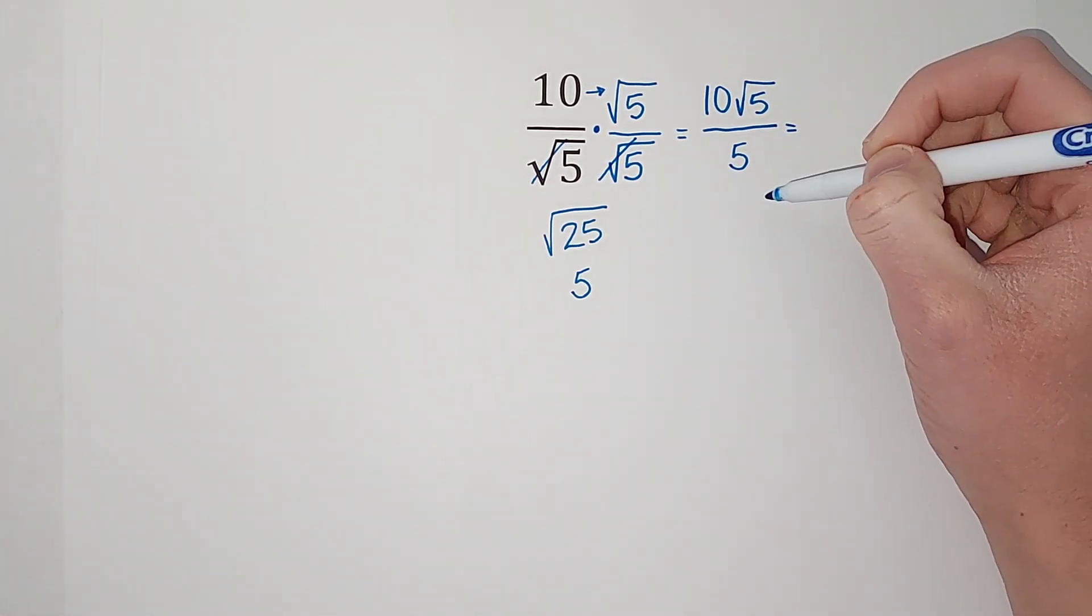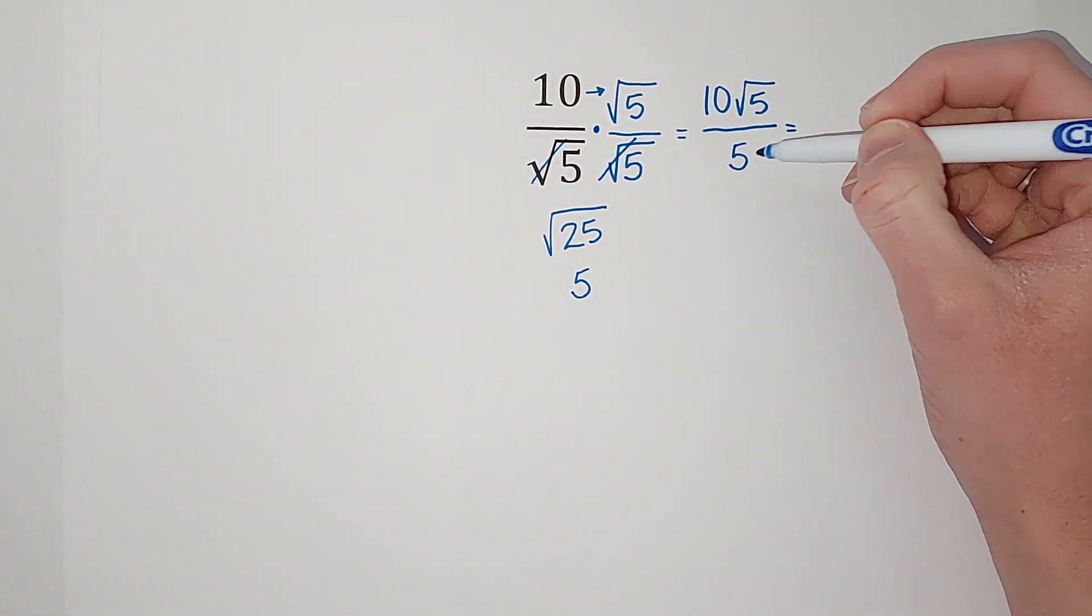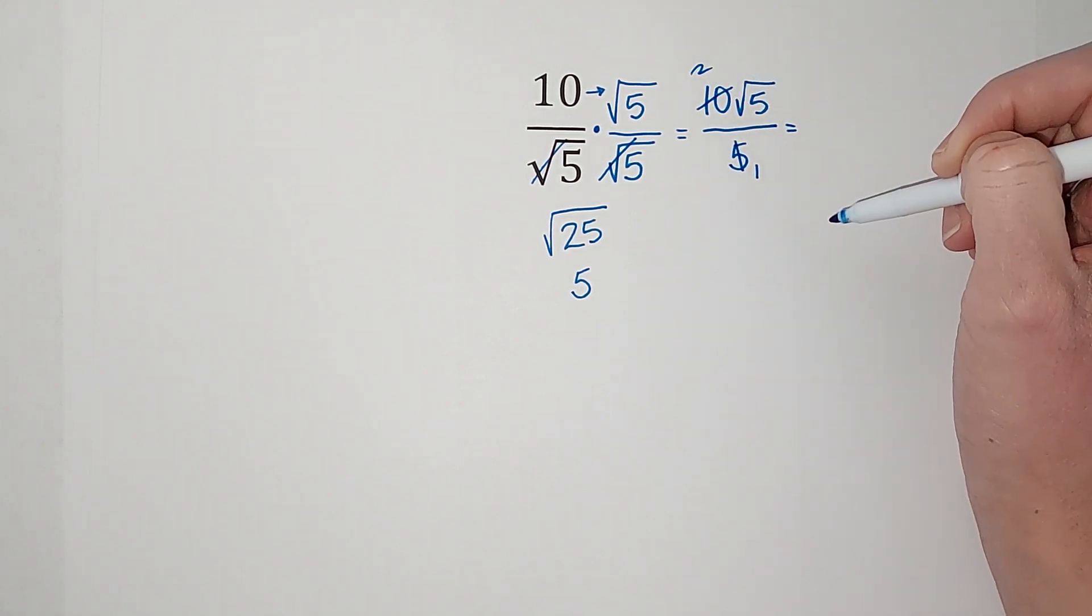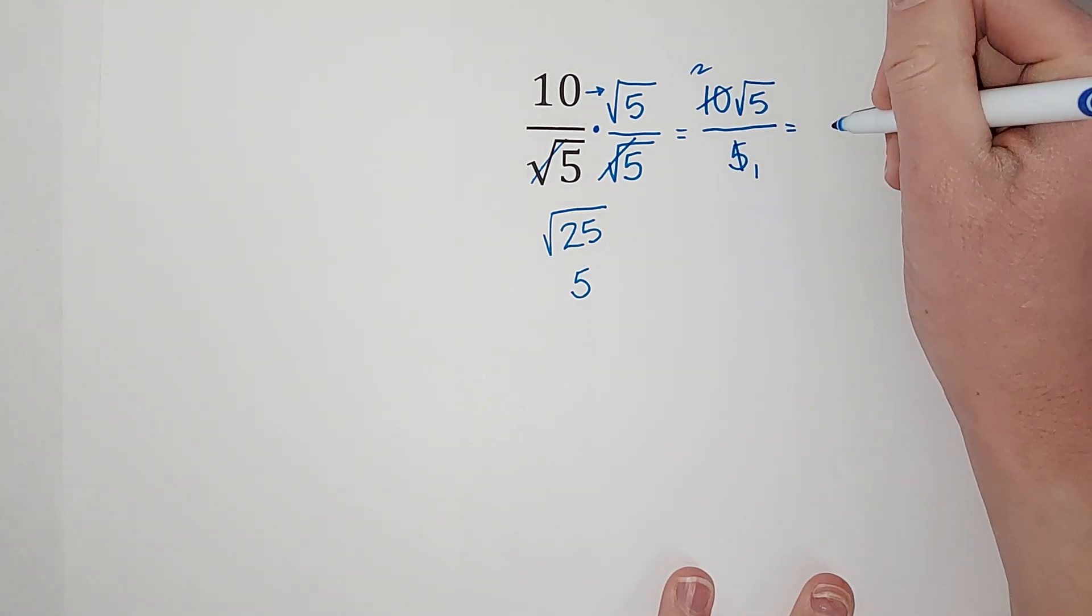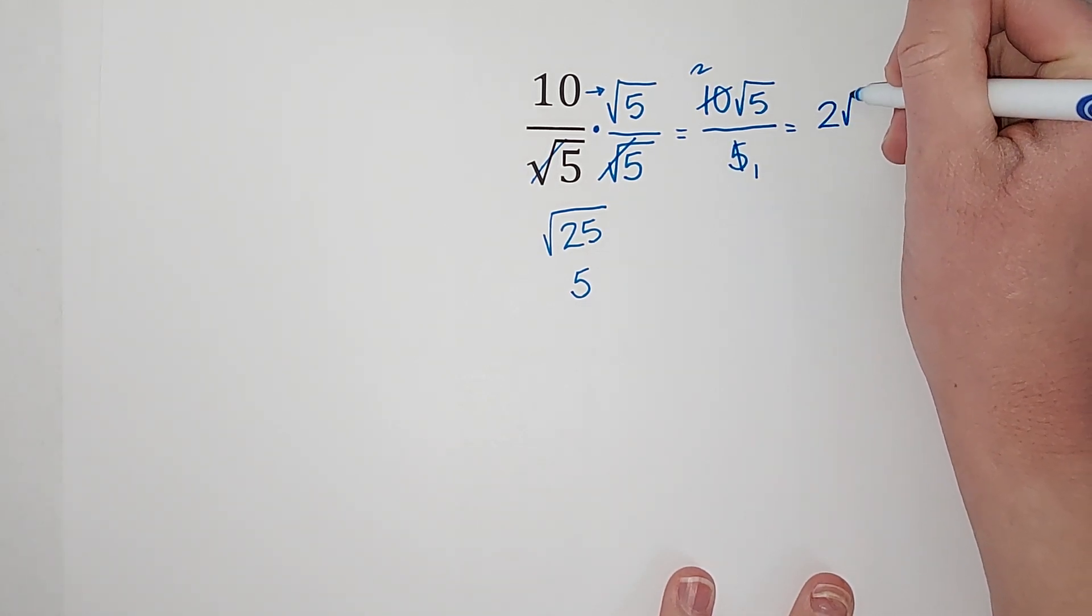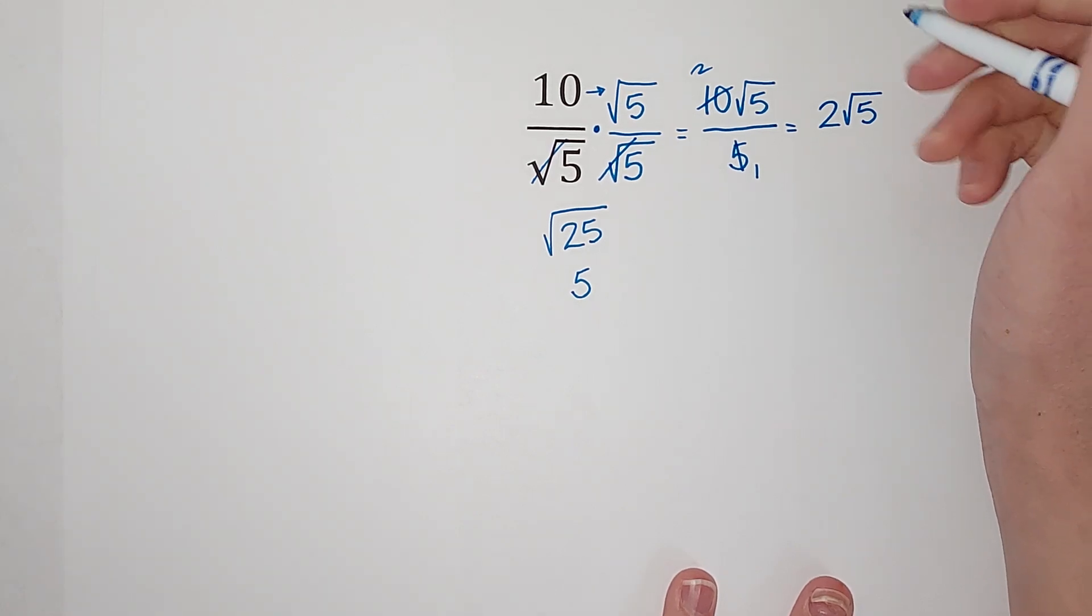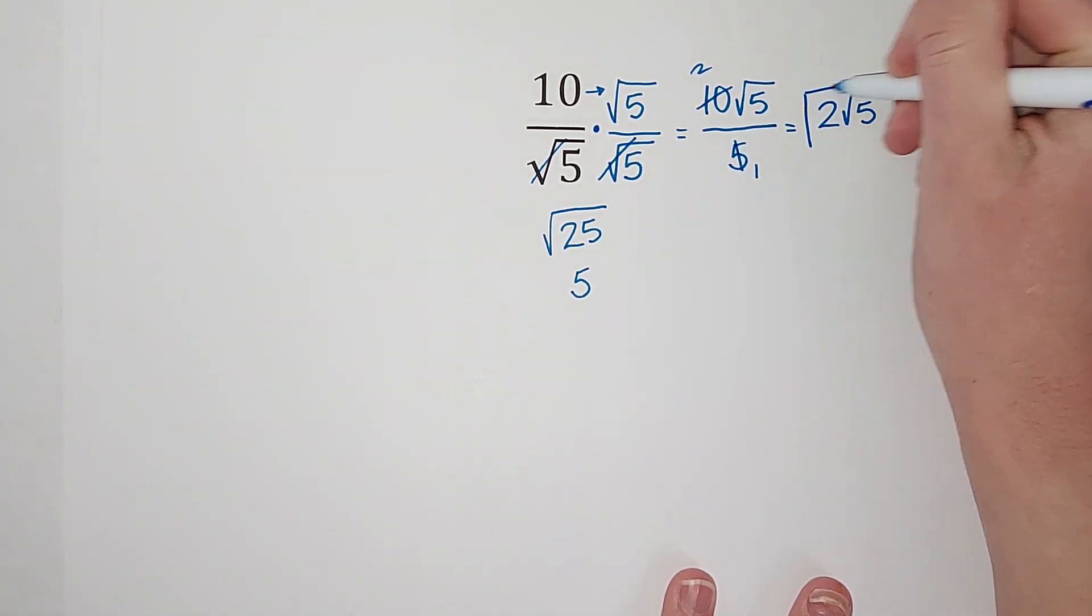Because I noticed that 5 goes into both of these, right? 5 goes into 5 once and it goes into 10 twice. So we are left on top with 2 square roots of 5, and on bottom we're just left with 1, which I don't have to write. So there's my answer: 2√5.